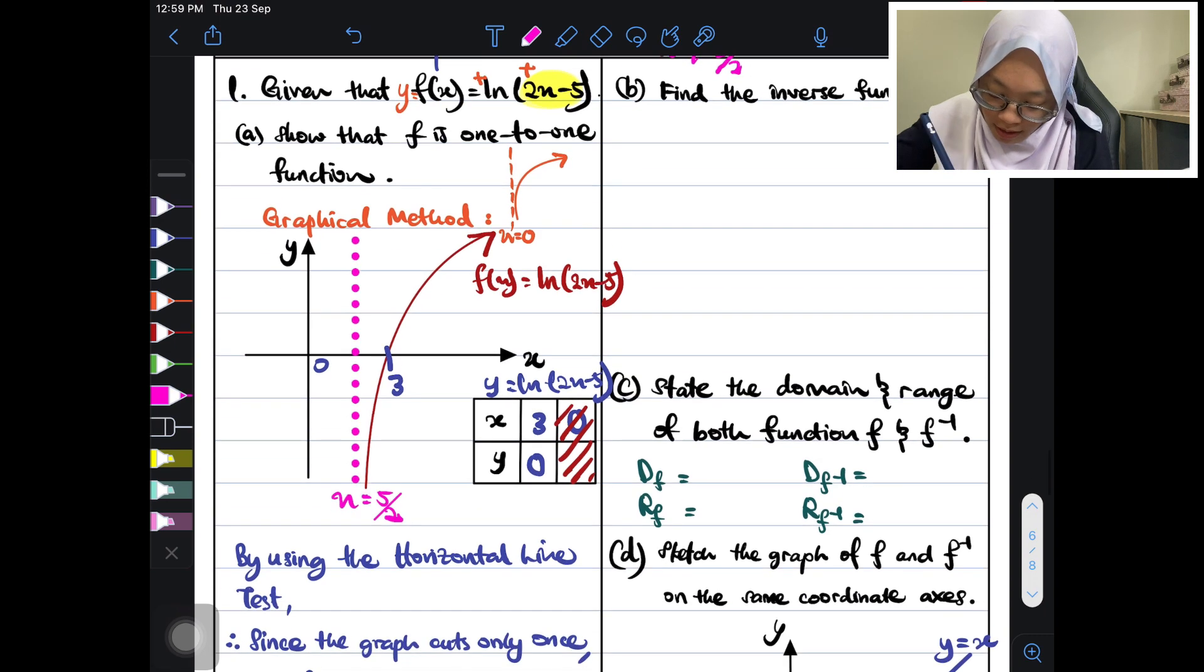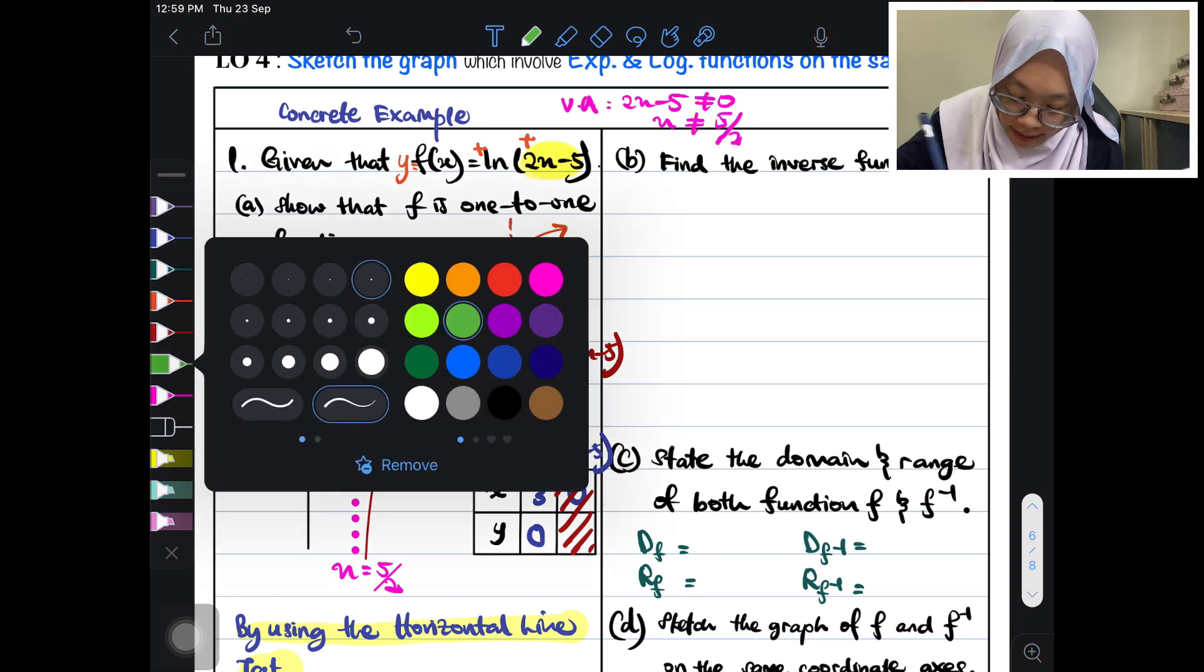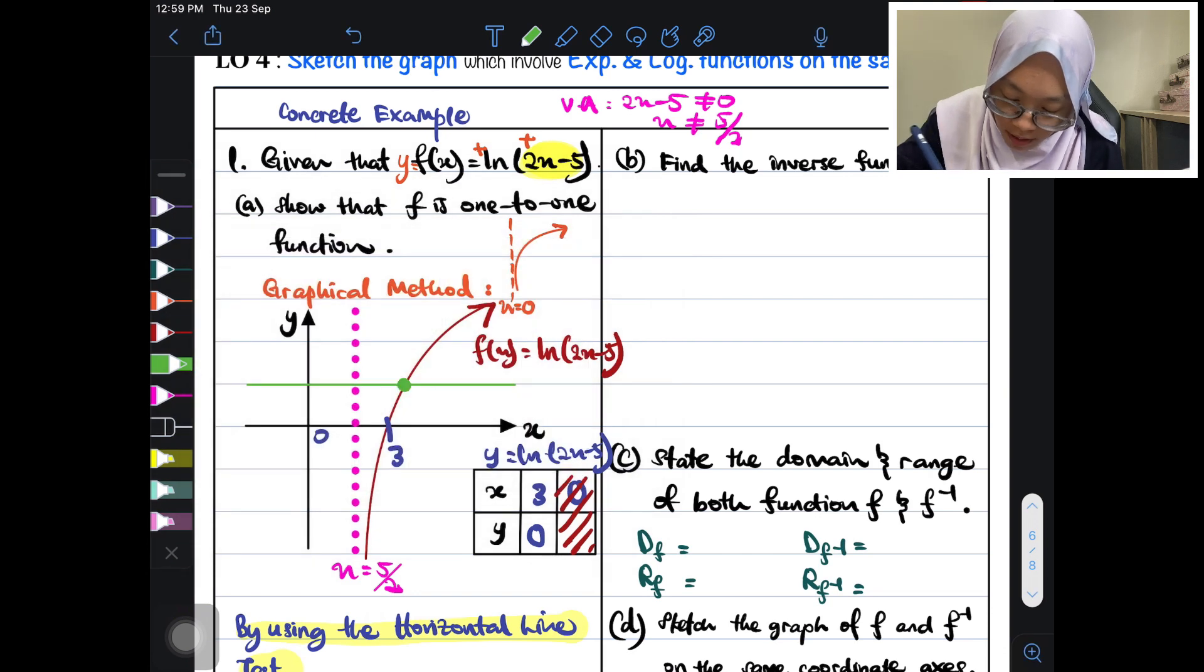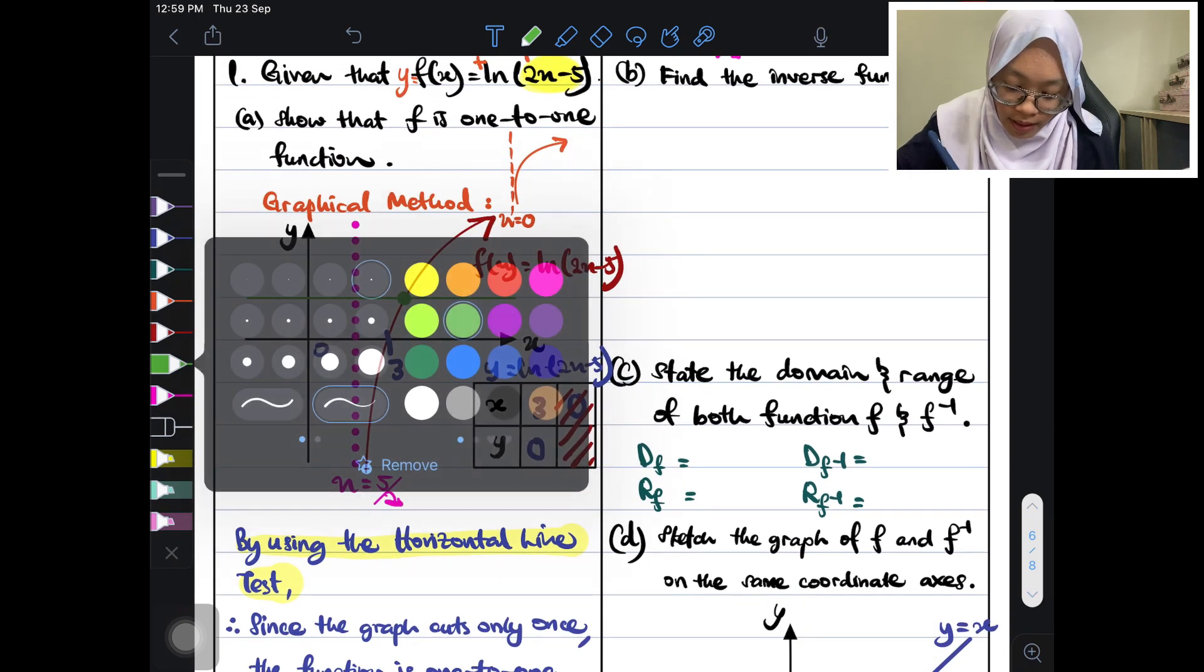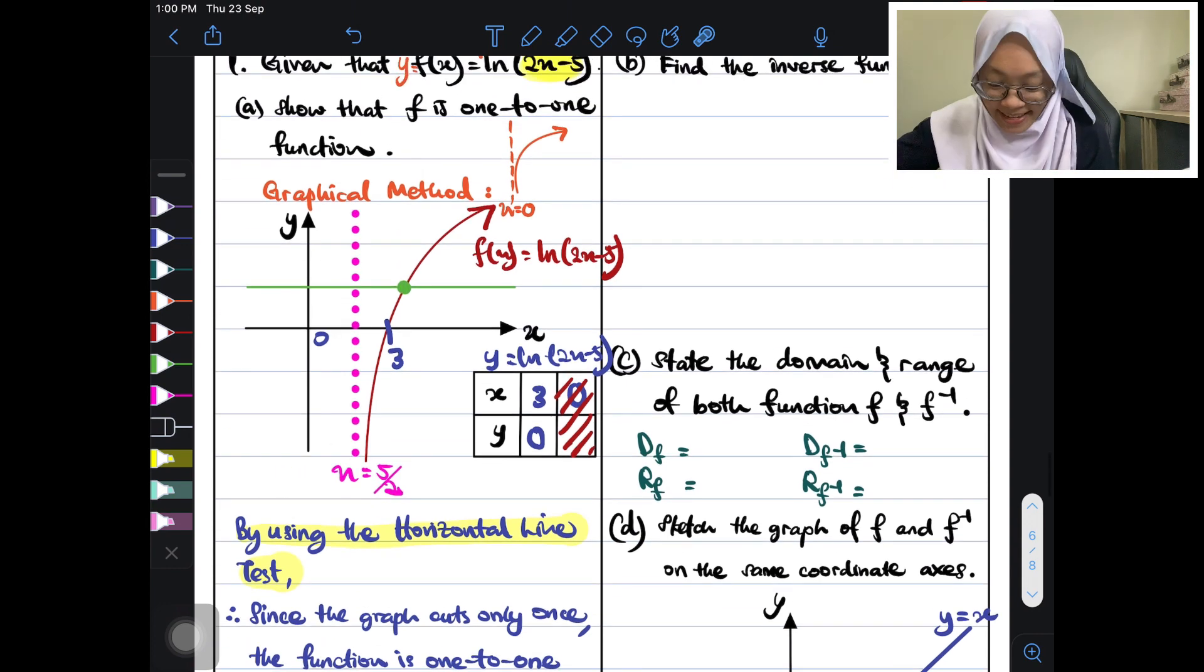Barulah kita boleh pakai by using the horizontal line test. Horizontal line test bermaksud, kita akan guna warna hijau. The graph cuts at only one point. Therefore, this is the one point over there. Since the graph cuts only once, the graph cuts at only one point. Therefore, the function is one-to-one function. Easy?